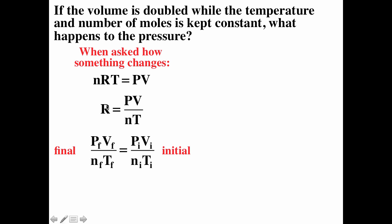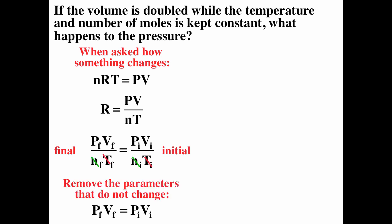Since R is a constant, PV over NT at time one must equal PV over NT at time two — using F for final and I for initial conditions. For this particular problem, temperature and moles are constant, so we can eliminate them, giving us P_F × V_F = P_I × V_I.